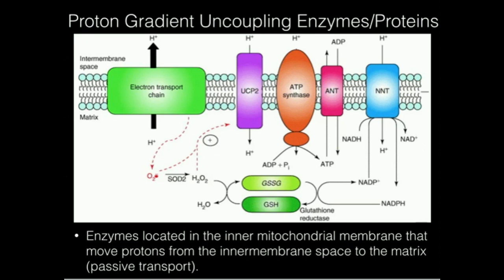However, we have a few others — particularly uncoupling protein (UCP), and then nicotinamide nucleotide translocase and nicotinamide nucleotide transhydrogenase. Those are two examples of uncoupling proteins. The reason they're uncoupling is that they also move hydrogen ions into the matrix, but they don't couple it to ATP synthesis.